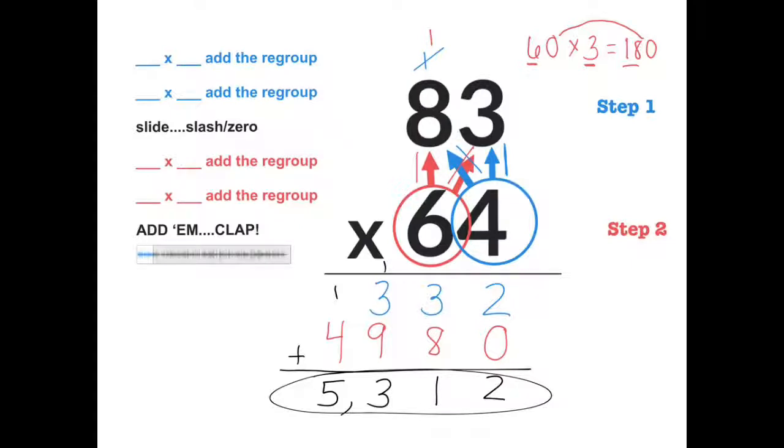One, two, ready, go! Four times three, add the regroup. Four times eight, add the regroup. Slash, zero. Six times three, add the regroup. Six times eight, add the regroup. Add them! Great job, everyone! Good disco!